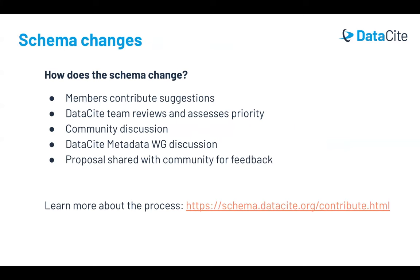If you're interested in seeing changes to the Datasite Metadata Schema, the best way you can do that is to contribute suggestions. Each suggestion is reviewed by the Datasite team and goes through a prioritization process before reaching the Metadata Working Group. When suggestions are prioritized, we encourage community discussion. The Metadata Working Group discusses the changes, agrees on a proposal, and we share those proposed changes with the community for feedback. You can learn more about the process at the link on this slide, including how to suggest changes.